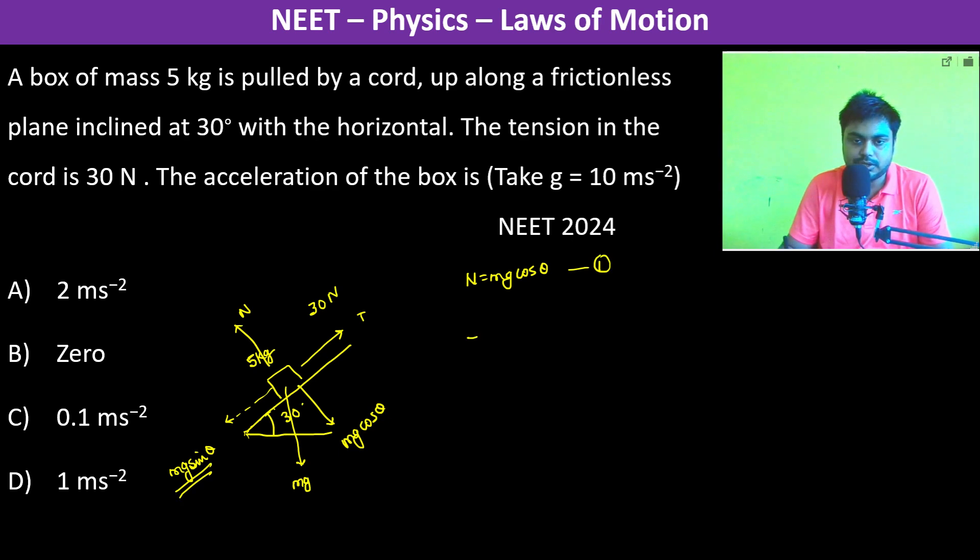Therefore, the net force is going to be T minus mg sin theta upwards, which is equal to 30 minus M, which is 5, into g, into sin 30, which is half.